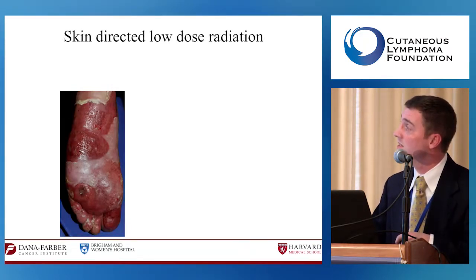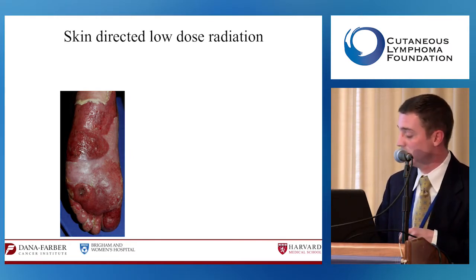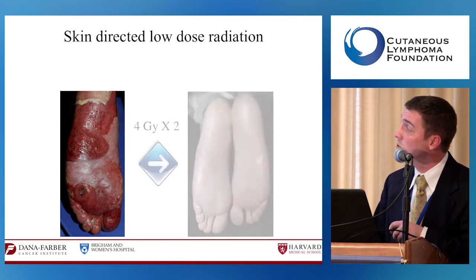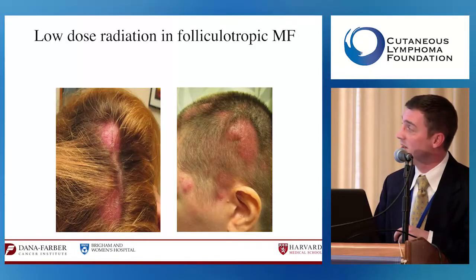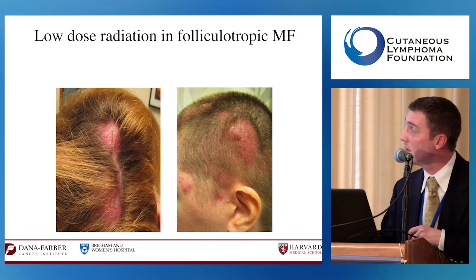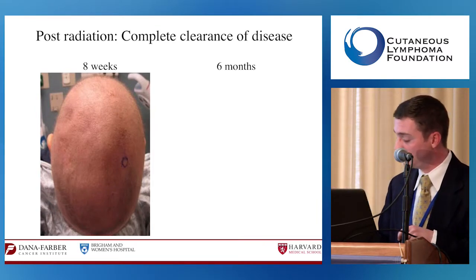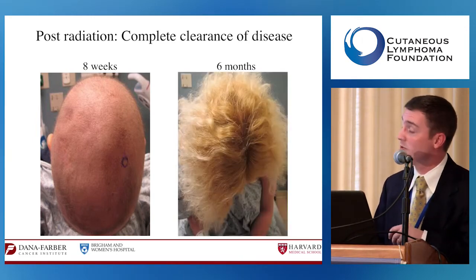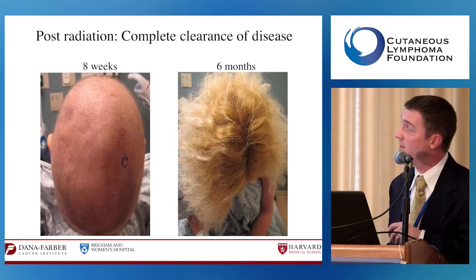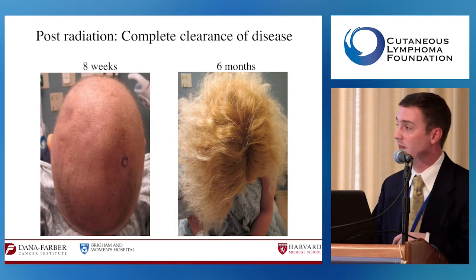One success case involves a syringotropic CTCL patient—where malignant cells cluster around sweat follicles—who was contemplating amputation. After just two sessions of four gray, he achieved clinical clearance and has remained clear for six years. Another patient with folliculotropic CTCL had thickening plaques on her scalp; eight weeks after therapy she lost her hair as expected, but her lesions responded well, and six months later she had complete hair regrowth, though the texture changed from straight to curly.